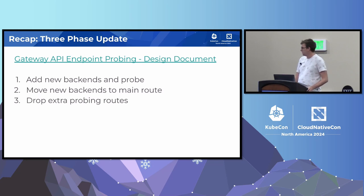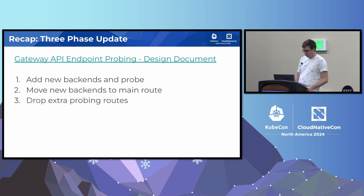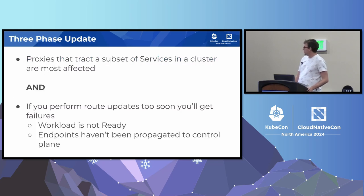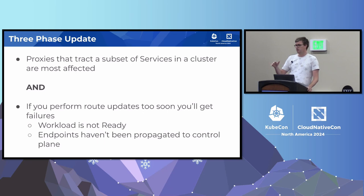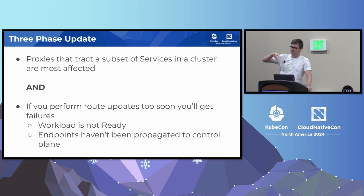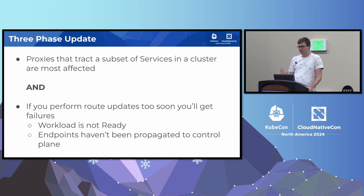The summary: if a proxy tracks only a subset of services, updates potentially aren't safe. If you deploy a new service and switch the route quickly, you should wait for the pod to be ready and for the endpoint to be ready in the Kubernetes endpoint slice. Even then, you need to wait for the endpoint slice IP to be detected by the proxy control plane — there's just a delay that happens.